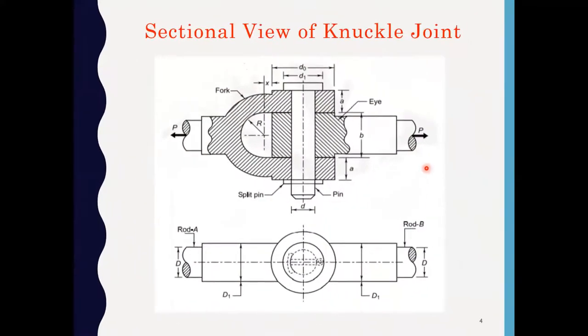This is the cross-sectional view of a knuckle joint. This is the cross-sectional front view and this is the top view of the knuckle joint.